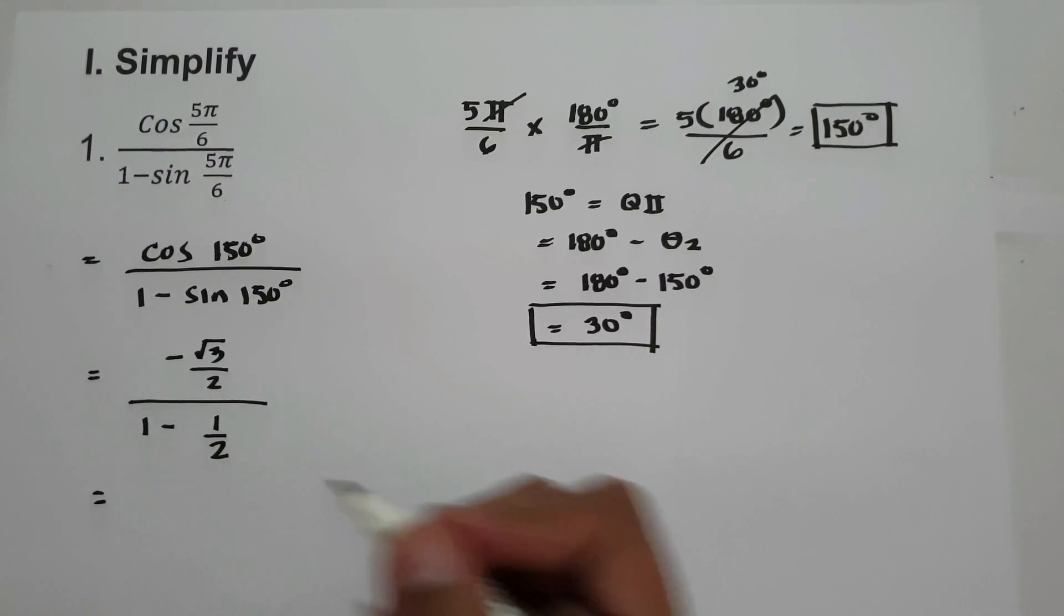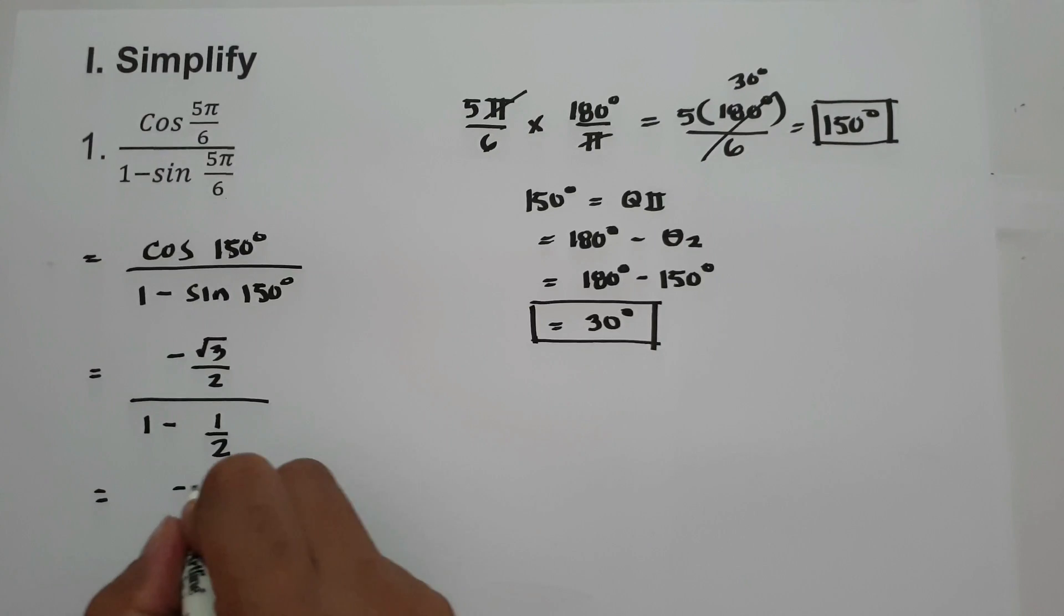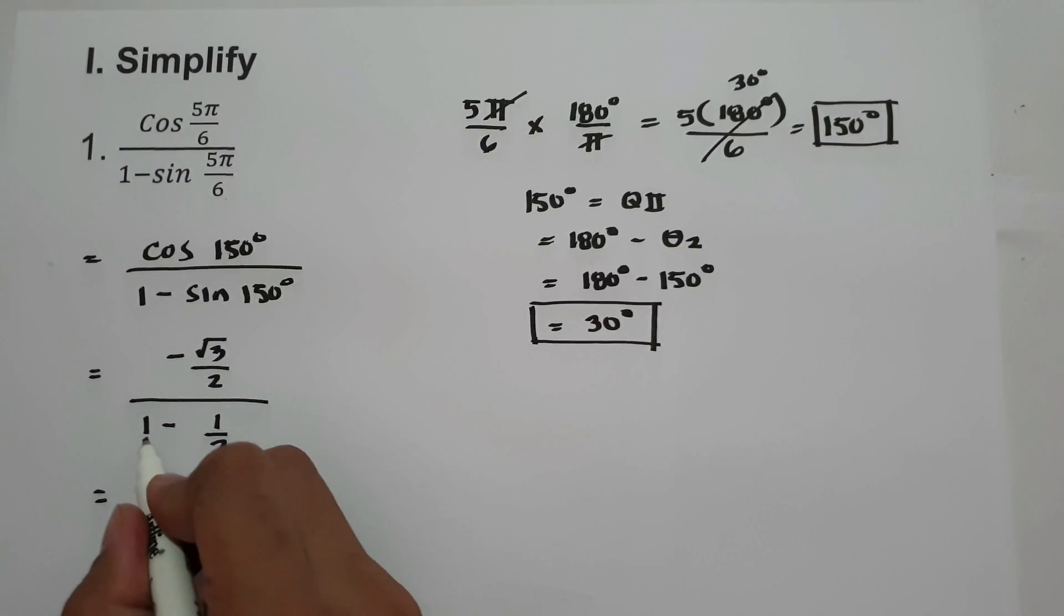And then let us simplify. We have negative square root of 3 over 2, and then 1 minus 1 half, that is 1 half.